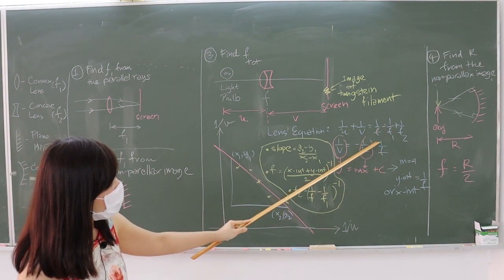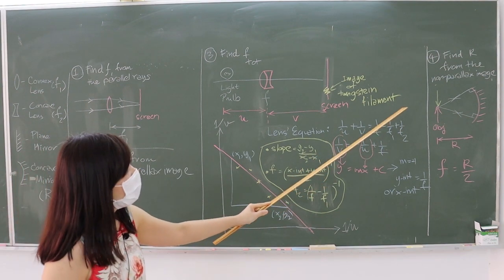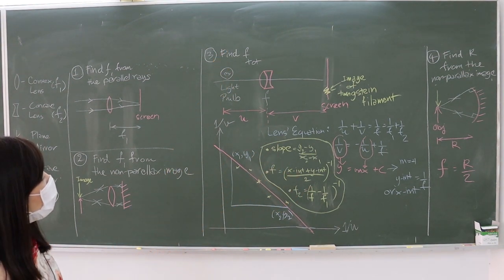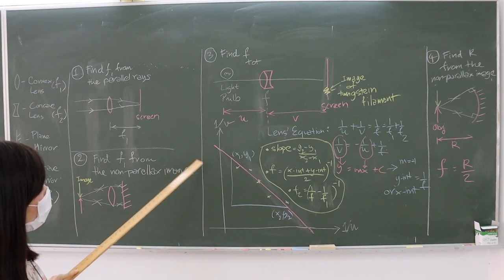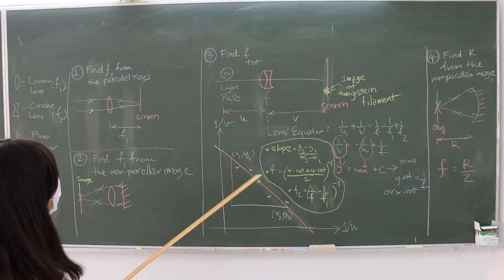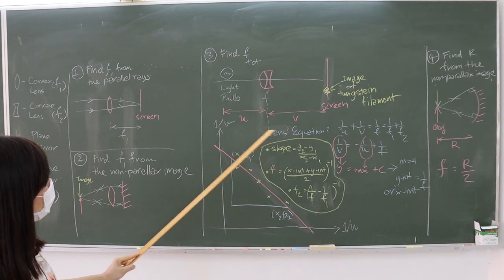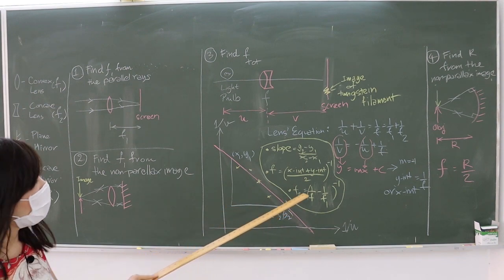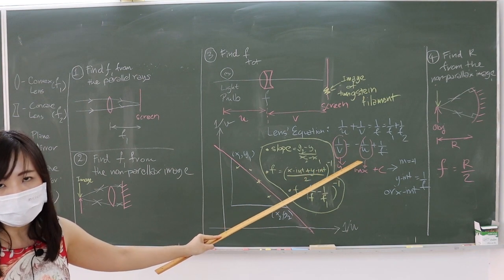On the graph, students should write down details of the data analysis. First, determine the slope of the trend line from the experimental data and check whether it is close to the theoretical value of minus 1. Second, determine the y-intercept and x-intercept of the graph and use the average of both to find the total focal length of the combined lenses. Finally, F2 can be determined from the inverse of (1/F_total minus 1/F1), where F1 should be the average value from parts 1 and 2.